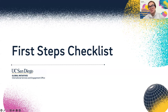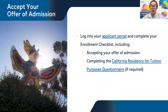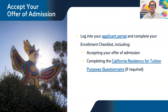Now for some reminders from undergraduate admissions as well as our office regarding your first steps. We want to encourage everyone, if you have decided to come to UC San Diego, to log into your applicant portal and complete your enrollment checklist. Two things to highlight: one is actually accepting your offer of admission — some students in their excitement forget to communicate that formally. Accepting the offer will also activate a few more steps that allow you to complete this checklist, including completing the California residency for tuition purposes questionnaire.